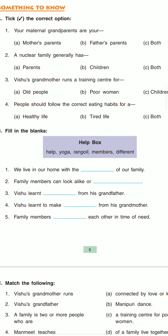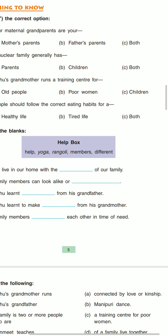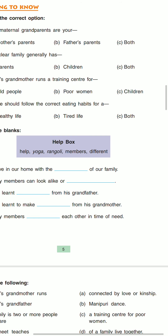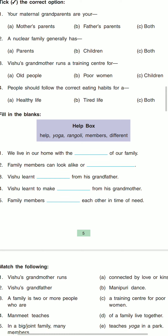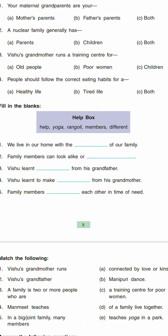Then question number three: Bishu's grandmother runs a training center for — options are old people, poor humans, and children. The correct answer is B — poor humans.